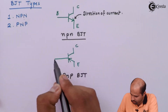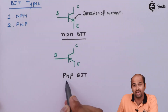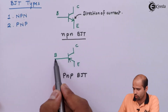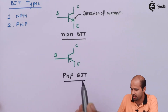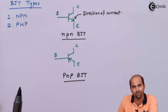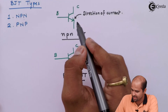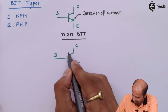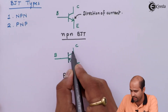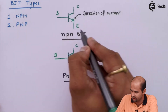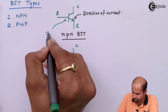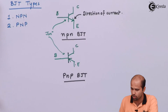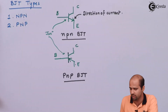In PNP BJT, this is collector, this is emitter, and this is base. As holes are moving from emitter to collector — and holes align with the direction of conventional current flow — current also flows from emitter through base to collector. The line in the symbol represents the junction between base-collector and base-emitter, and the arrow represents the direction of current. So we are now clear with the symbolic representation of both BJT types.